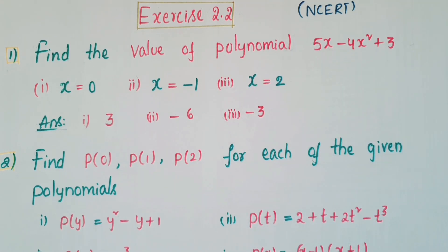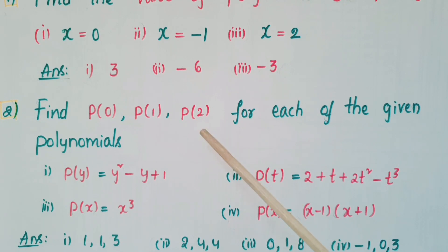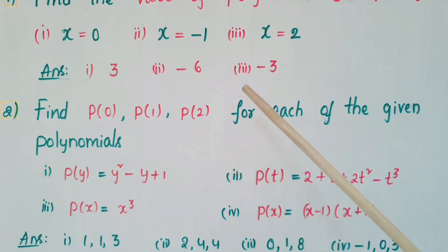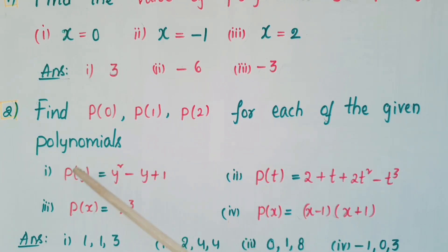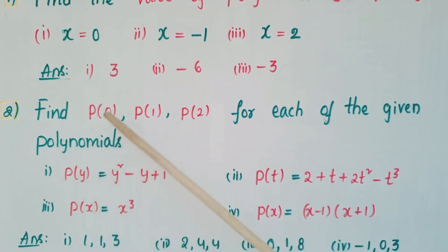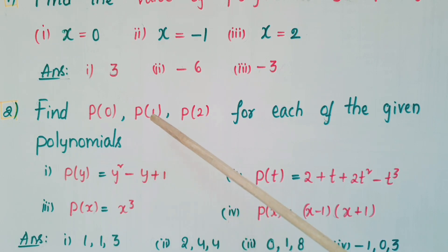Second question: find p(0), p(1), and p(2) for each of the given polynomials. Here they have given 4 polynomials, and for each polynomial we have to replace the variable as 0 first, then 1, then 2. So for each polynomial we have to calculate 3 values.